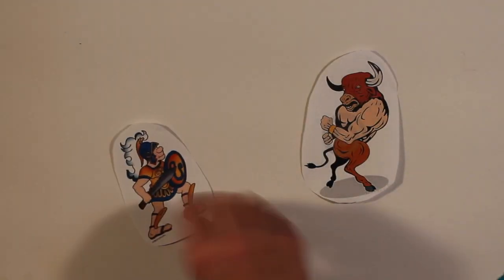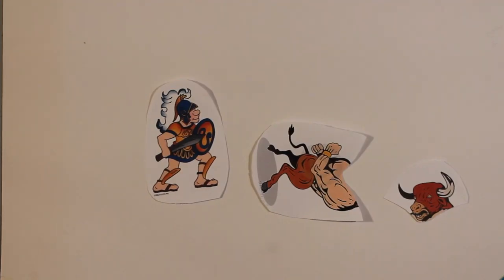Once he found the beast, Theseus drew a sword that he had kept hidden and slayed the Minotaur.